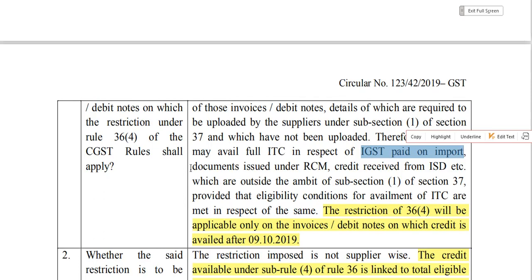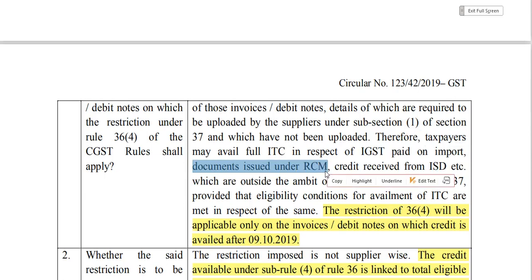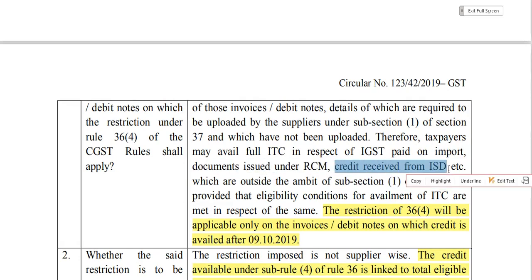Second exception: documents issued under Reverse Charge Mechanism (RCM). If you have purchased from a supplier covered under RCM, you pay the GST yourself through a self-invoice. Third exception: credit received from an Input Service Distributor (ISD).